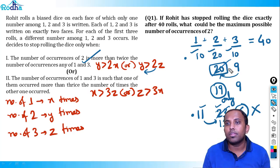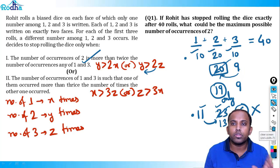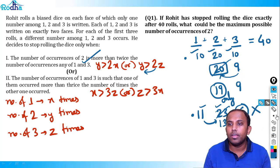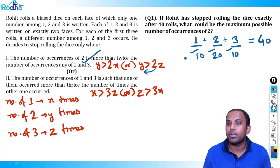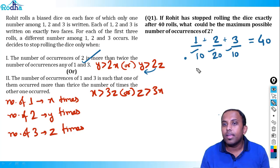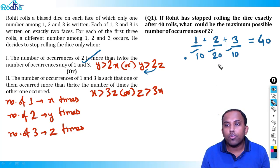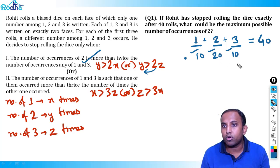I hope this set is clear now. Let's move to question 3. If Rohit stopped rolling the dice after 30 rounds, what is the minimum possible number of times 1 occurred? So we need x + y + z = 30 and want to minimize x. Since x appears in both conditions, we need to be careful.